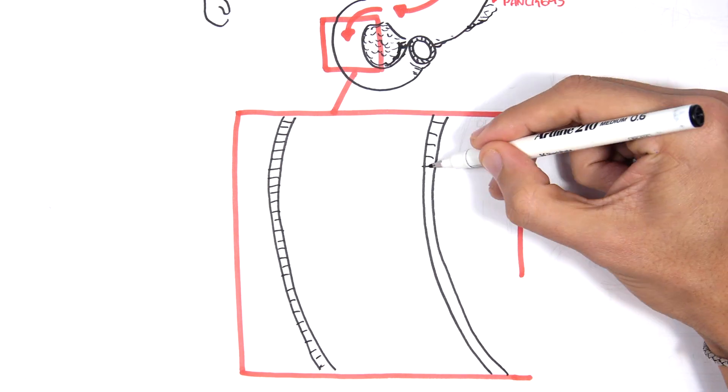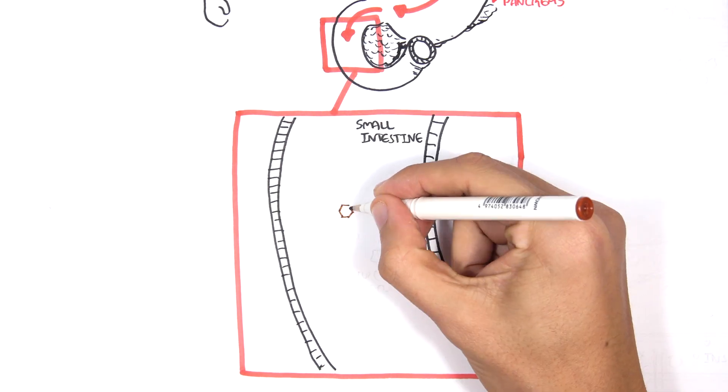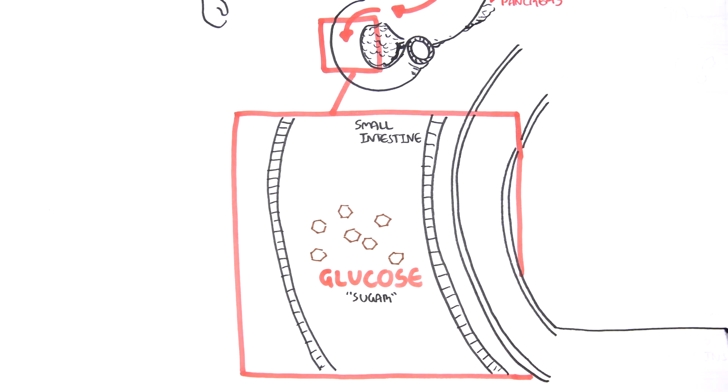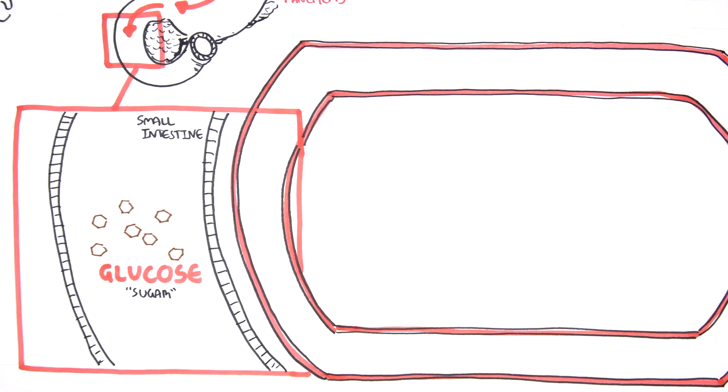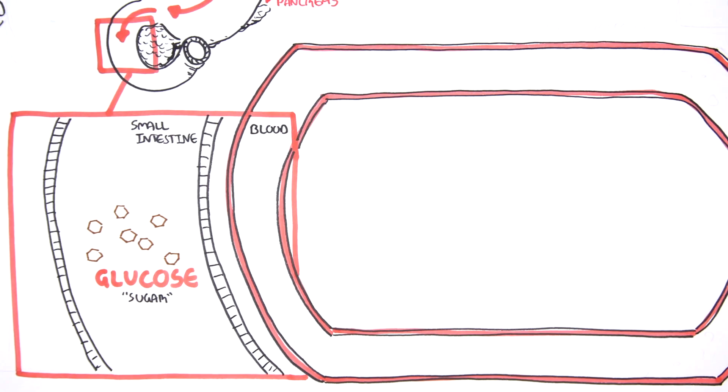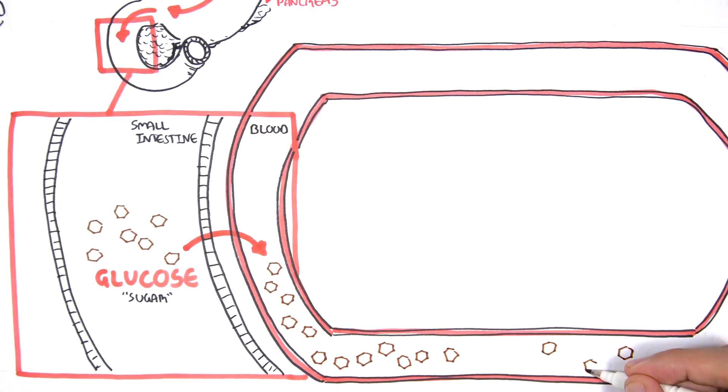One of the final products of food digestion is glucose, commonly known as sugar. Glucose is absorbed from the small intestine into your blood. As a result, we have high blood glucose levels.